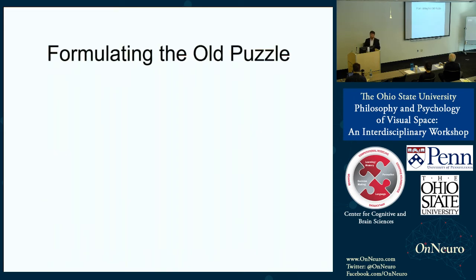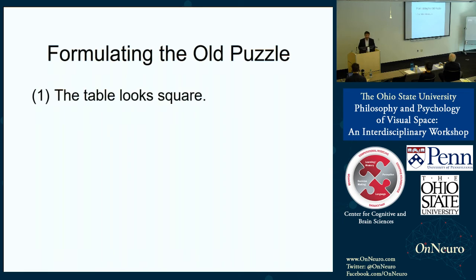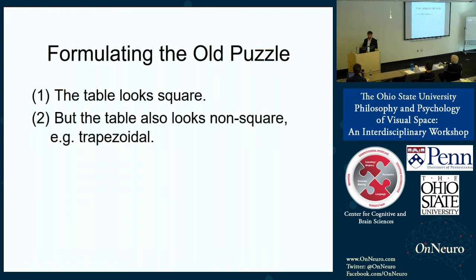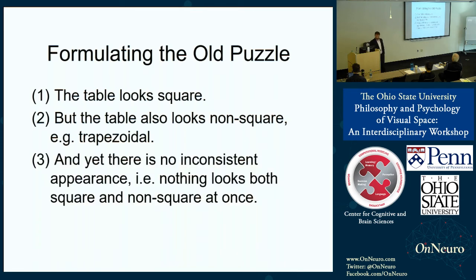Here's a more careful formulation of the puzzle as an inconsistent set of claims, each with some initial plausibility. The first claim is that the table looks square when viewed from directly above — in fact, from many angles. But the table also looks somehow non-square when viewed from an angle — for example, it looks trapezoidal. And yet there's no inconsistent appearance: nothing looks both square and non-square at once.